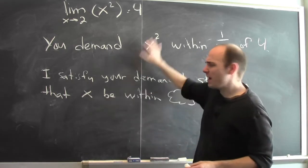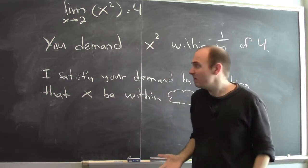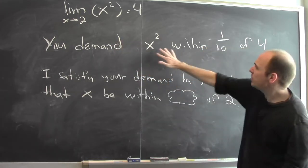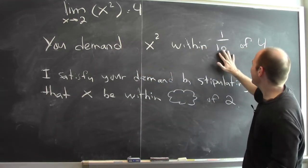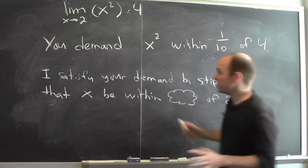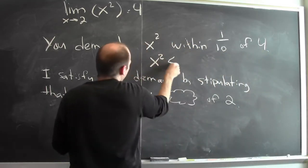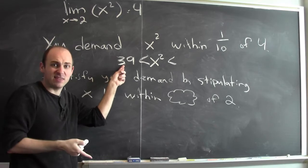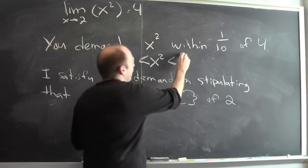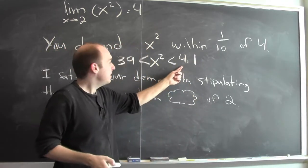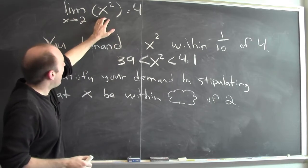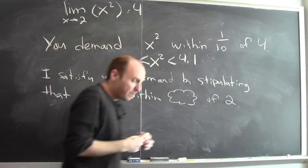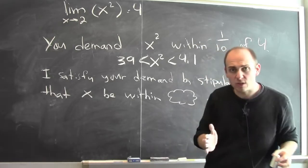I want to format this as if it were a dialogue. You're going to make some sort of demand — you're going to demand that x squared be close to 4. Maybe you'll demand that x squared be within a tenth of 4. That means you're asking that x squared be between 3.9, which is a tenth less than 4, and 4.1, which is a tenth more than 4. So you're going to make a demand that the output be close to 4.